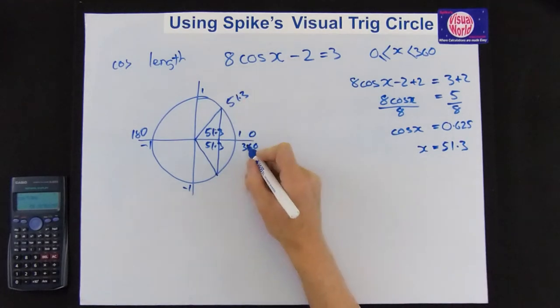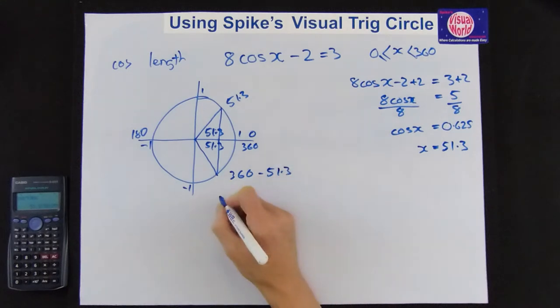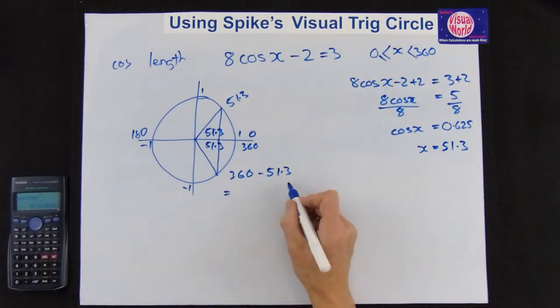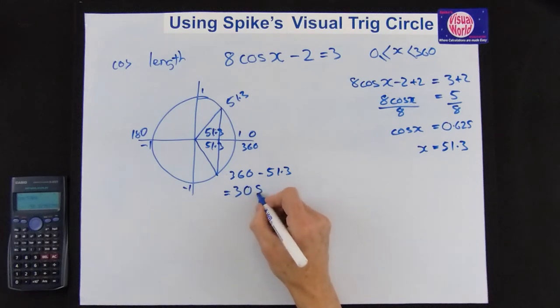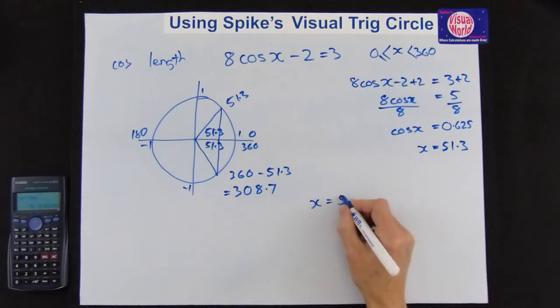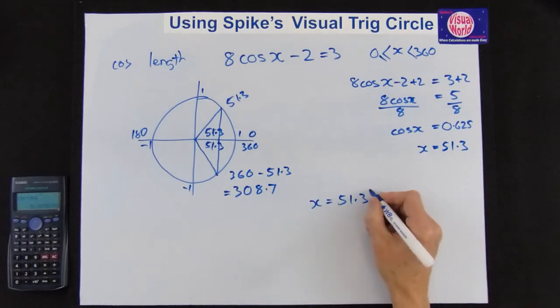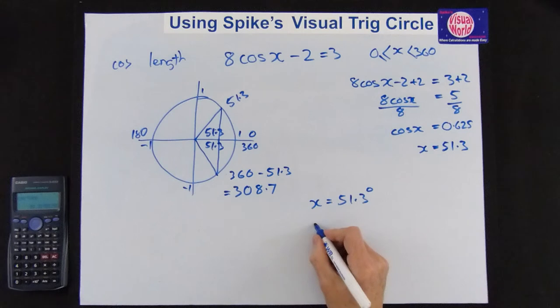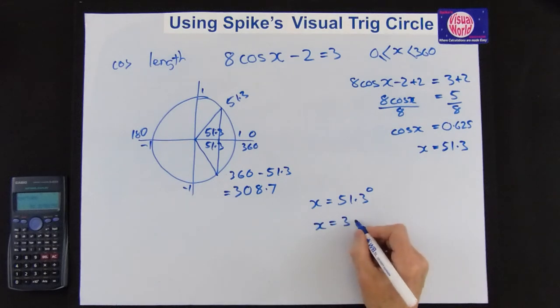And that one there is back from 360. So it's almost at 360. So it's 360 take away 51.3. And that gives you 308.7. So our answer is x equals 51.3 degrees. And the other answer is x equals 308.7 degrees. And that's how easy it is.